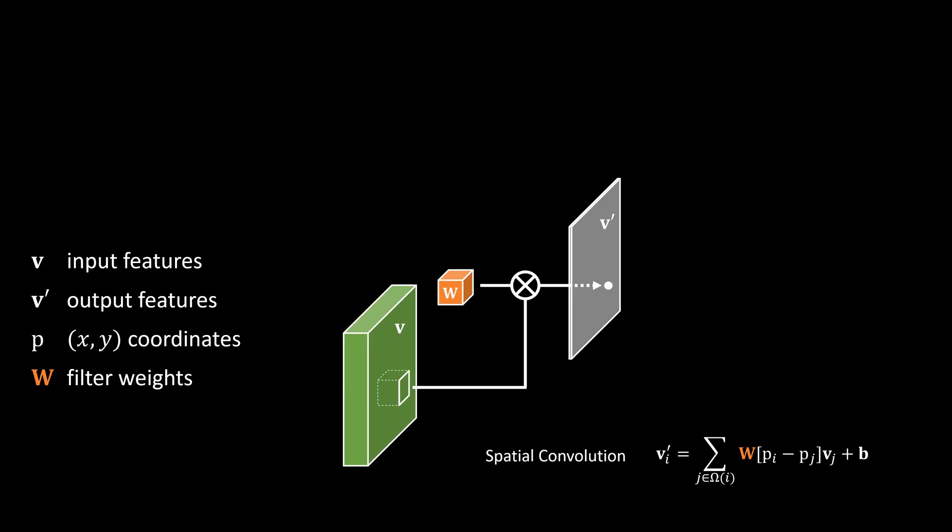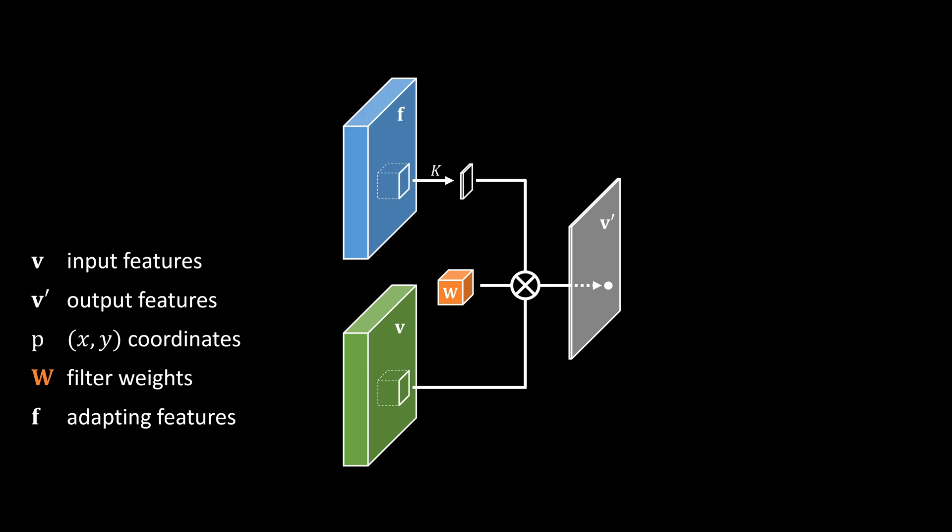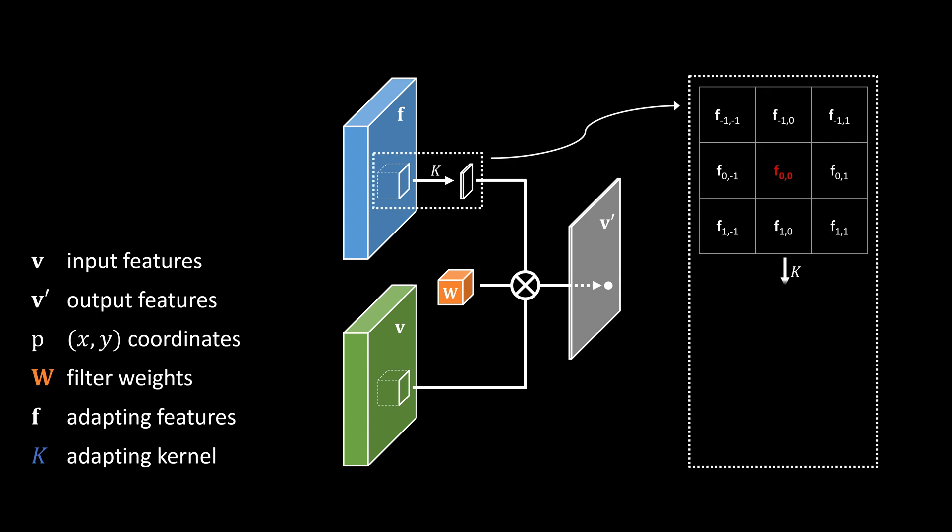In a standard spatial convolution, filter W is multiplied with local patches in a sliding window fashion and generates output V'. In our layer, we consider an additional input F, which itself can come from some other network layers. Our kernel function K, which we call adapting kernels, is applied on F and compares F on each pixel with all other pixels within its filtering neighborhood. The result is then used to modify the filter weight W for the current position.